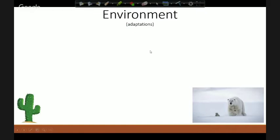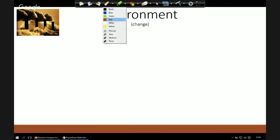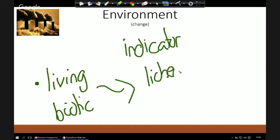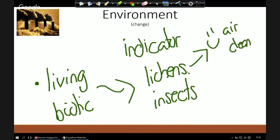The second part we need to know when we're looking at the environment is how we measure any type of environmental change. To measure change, we need some kind of indicator. This can come in two forms. We can have living indicators, which is biotic. The ones to remember are things like lichens and insects. You don't need to know specific types, just that some survive when the air is very clean. Certain lichens which show us the quantity of air pollution will only survive in very clean air.